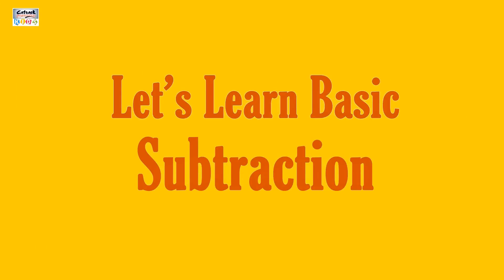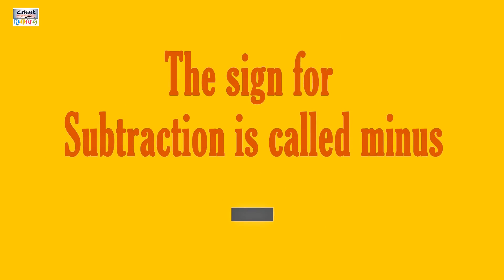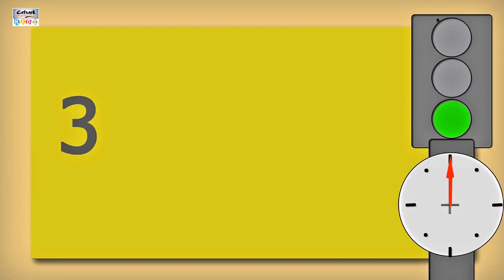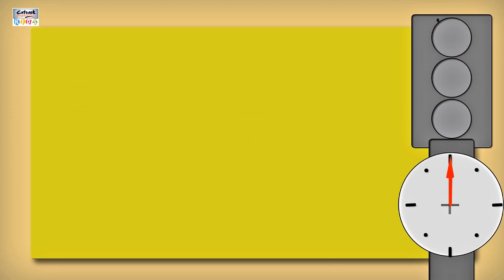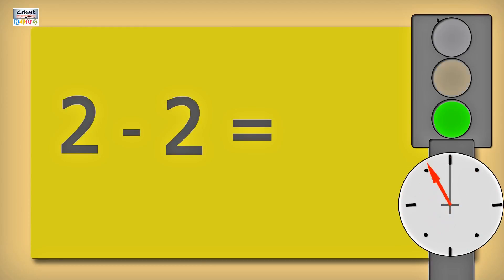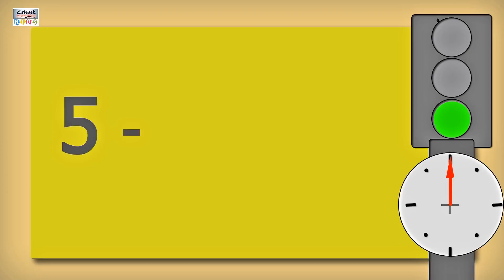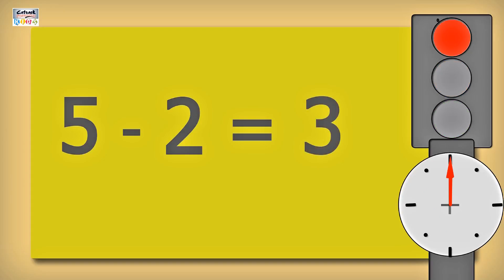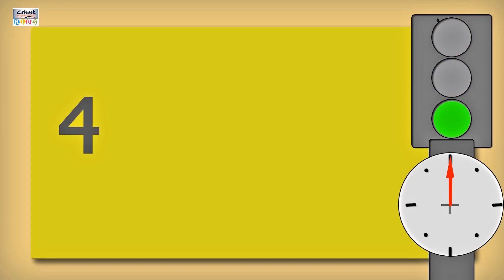Let's learn basic subtraction. The sign for subtraction is called minus. Three minus two is equal to one. Two minus two is equal to zero. Five minus two is equal to three. Four minus two is equal to two.